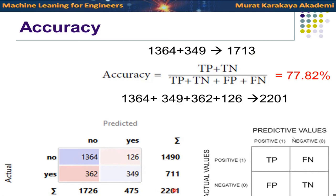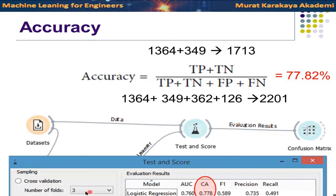From the confusion matrix totals you can compute accuracy as 77.82 percent, and this matches the Test and Score result. If you apply cross-validation with three folds, you need to compute three confusion matrices for each test result, get the accuracy for each fold, average them, and that gives you the final accuracy result. For this demonstration I will just use the test-on-train option in Test and Score.